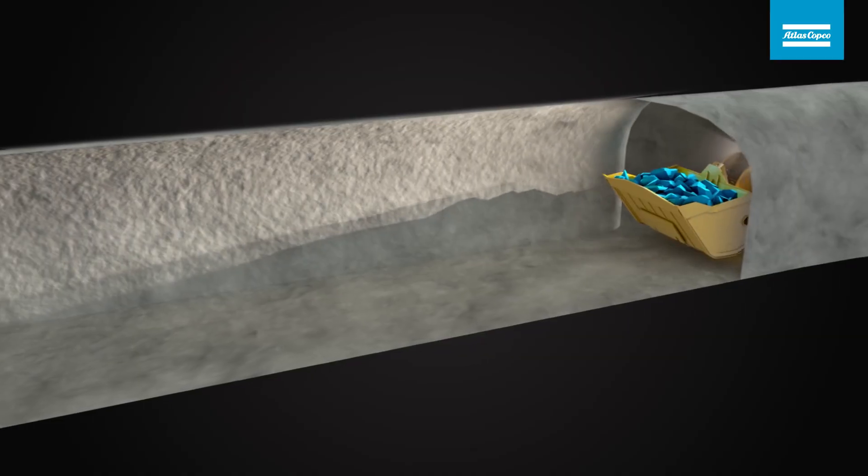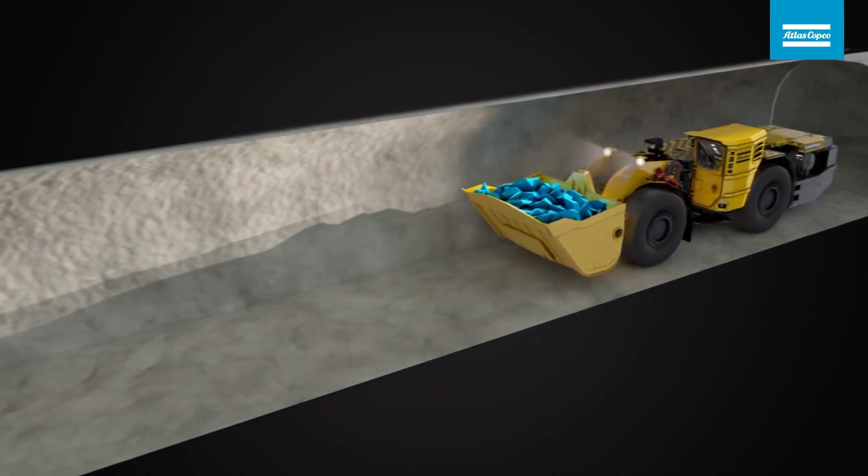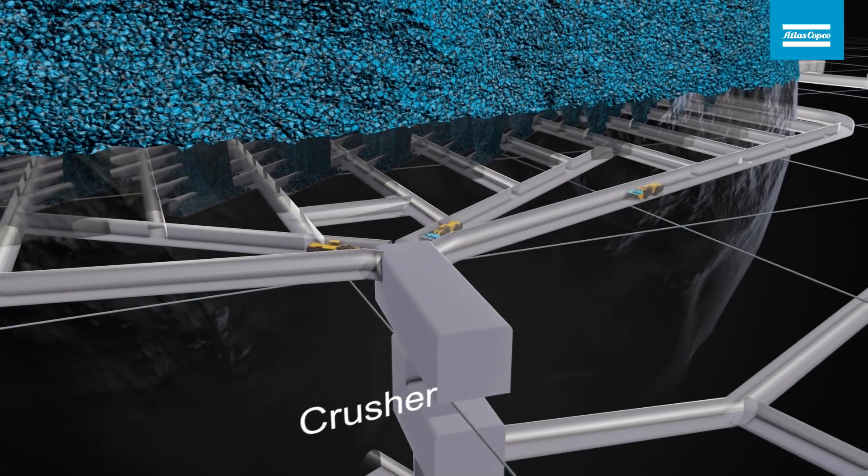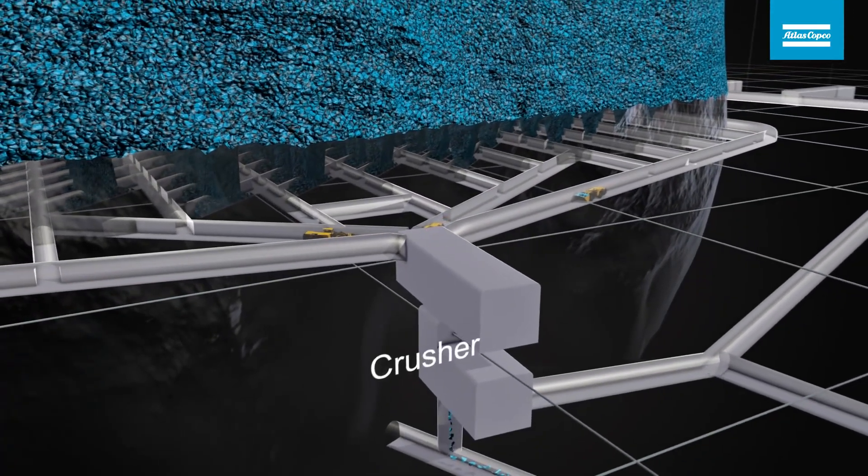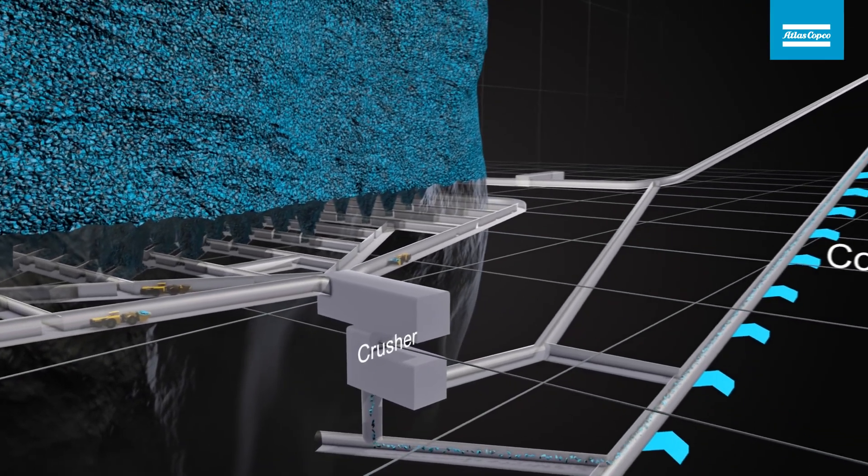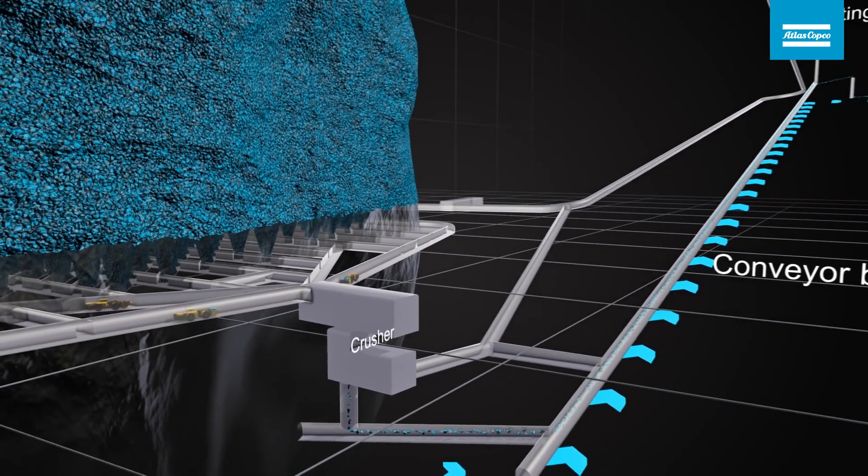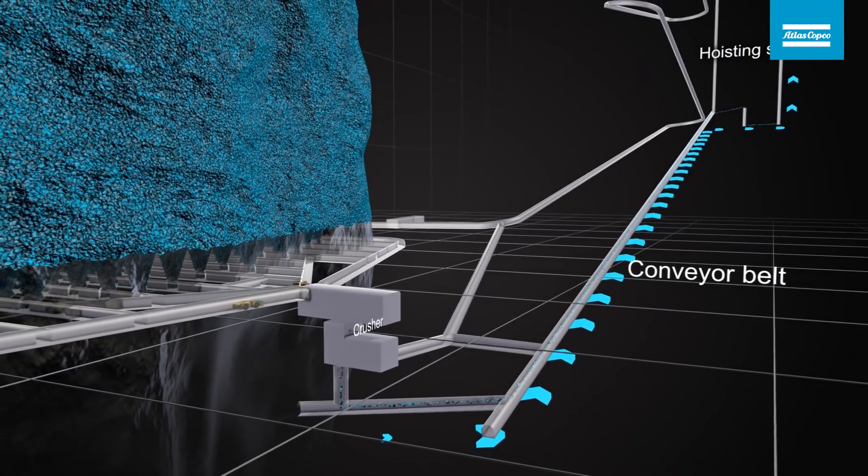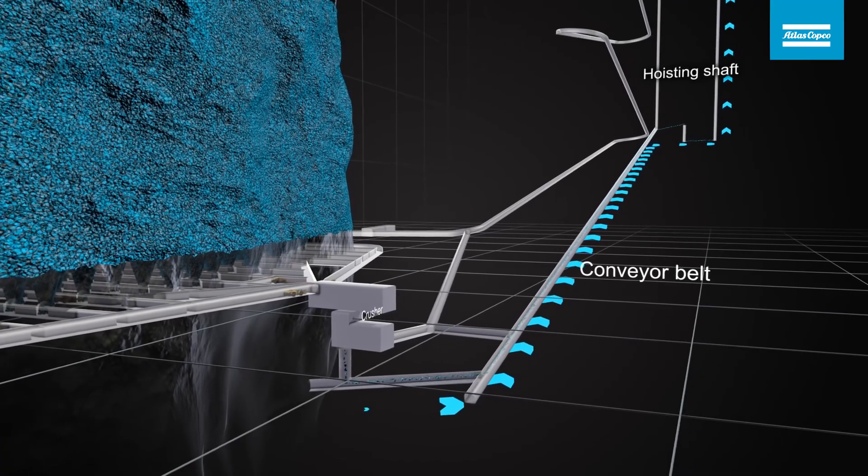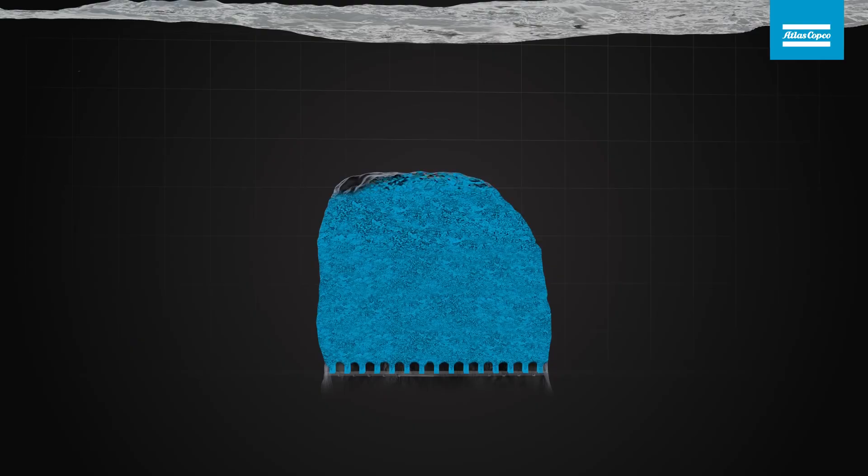Rock is loaded from the draw points and can be dumped into ore passes connected to a haulage level or directly into a crusher. A variety of transportation methods can be employed for transporting ore to surface. The fragmentation of the ore and the crushing requirements are key factors influencing the choice of a method.